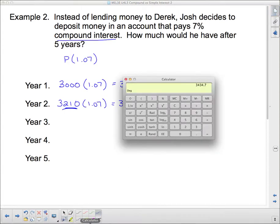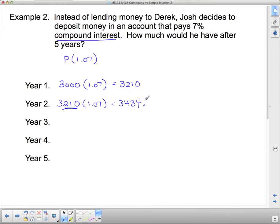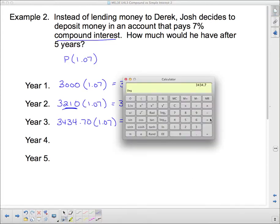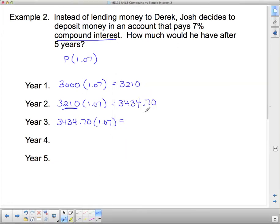And now we're going to reinvest this in the next year. 34.34.70. We're going to reinvest that at 7%. And what do we get? Times 1.07. 36.75.13.